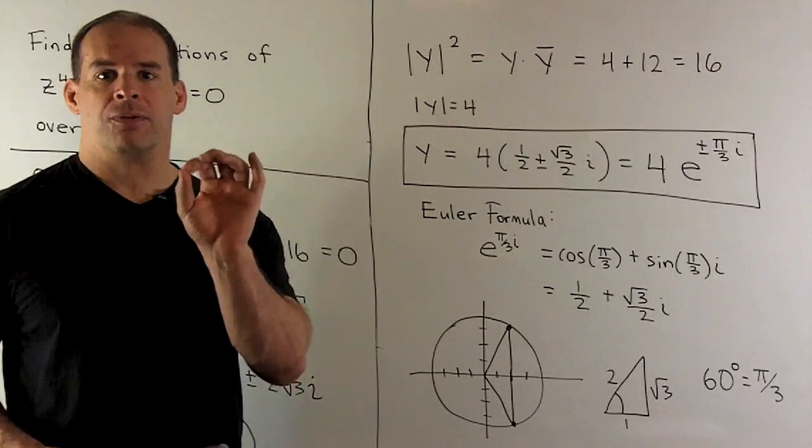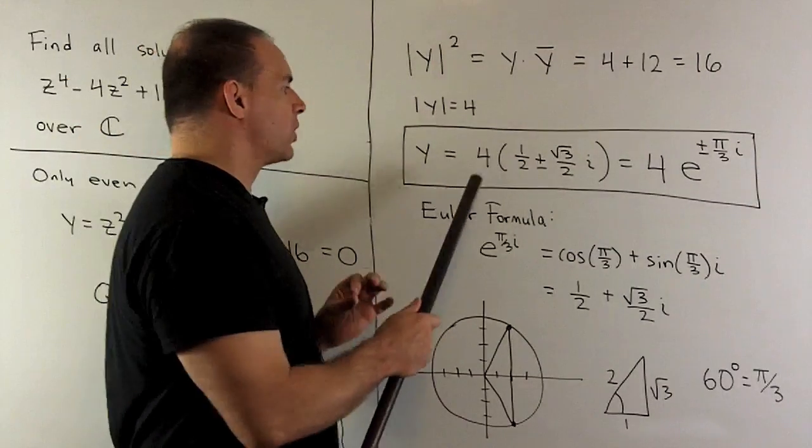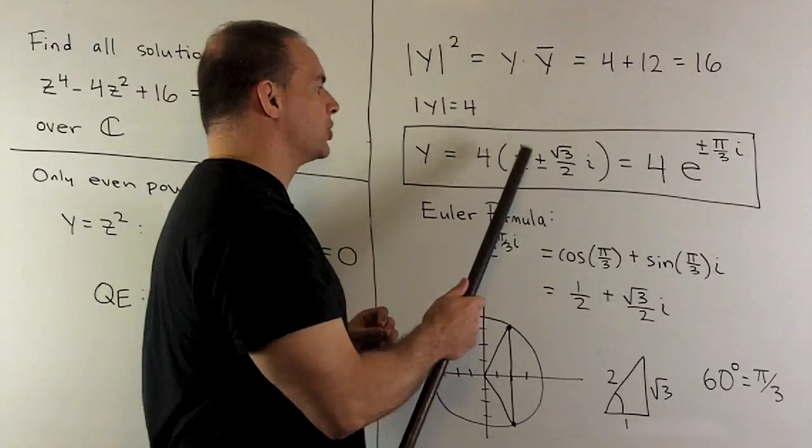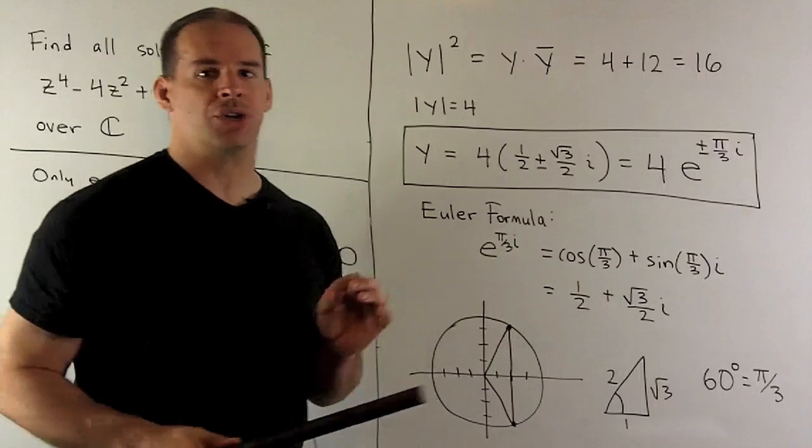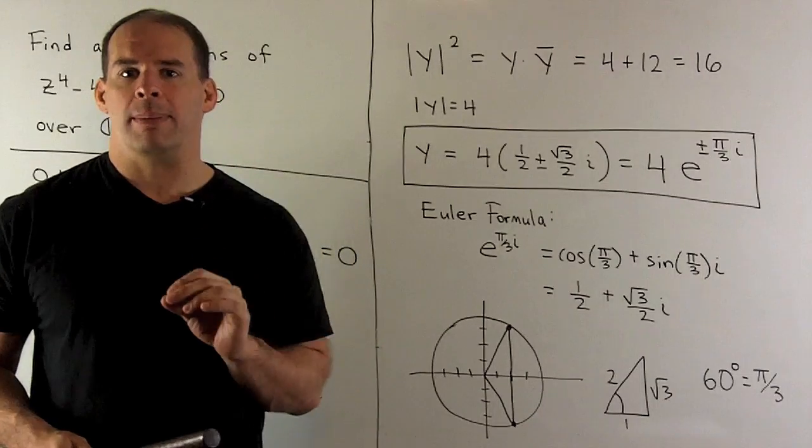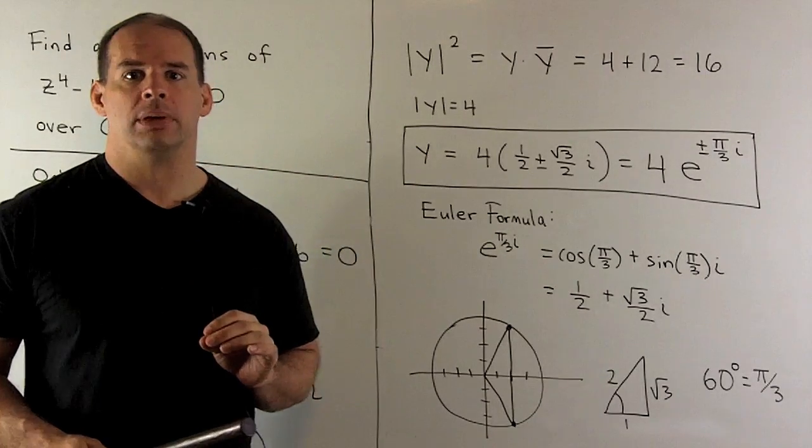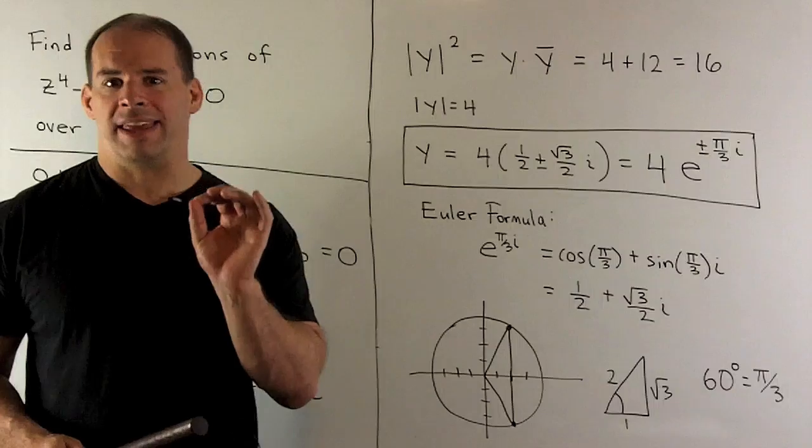Then we'll factor 4 out of y, so I'll have 4 times 1 half plus or minus the square root of 3 over 2i. Both of these numbers here live on the unit circle, and we'll want to put them in exponential form. So for that, we need to find the angle.